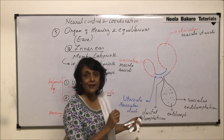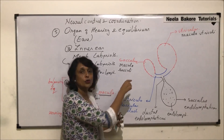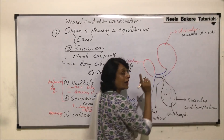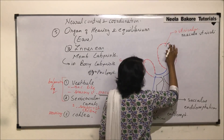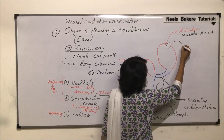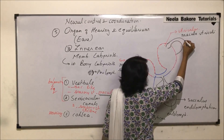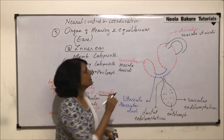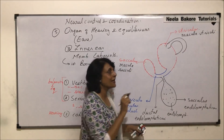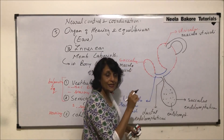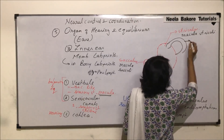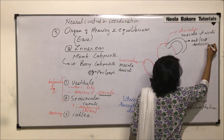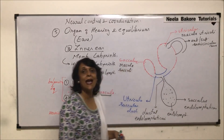Each canal opens into the utriculus from both its ends. Let us draw the anterior one first. At one end of the canal there is a swelling which is known as the ampulla. This is the swollen part. This is the superior or anterior semicircular canal. It opens at both ends into the utriculus, but one end has the swelling — the ampulla. This swollen part is the ampulla of this canal.